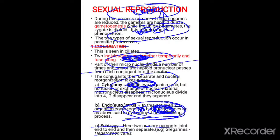In endomixis, not even two organisms come close together, but in the individual organism the macronucleus disappears, the micronucleus divides to form pronuclei, and those pronuclei fuse to form the nucleus — helping in the reorganization of the nuclear material of the individual protozoan. In syzygу, two or more gametes join end to end and then separate.